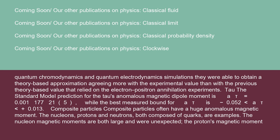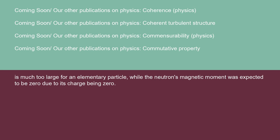Composite particles often have a huge anomalous magnetic moment. The nucleons, protons and neutrons, both composed of quarks, are examples. The nucleon magnetic moments are both large and were unexpected. The proton's magnetic moment is much too large for an elementary particle, while the neutron's magnetic moment was expected to be zero due to its charge being zero.